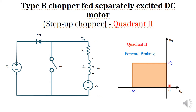Quadrant 2 operation means voltage is positive and current is negative, so as a result the power will be negative — V into I — that is, power will be negative. That is why power flows from load to source. This drive has two modes of operation: the first mode is when switch S1 is on, and the second mode is when switch S1 is off.